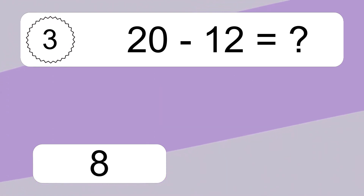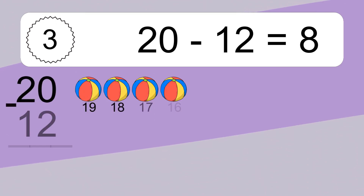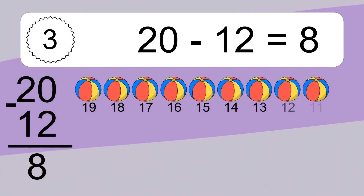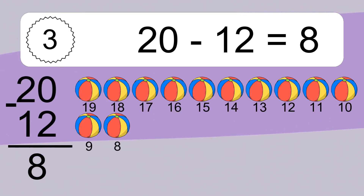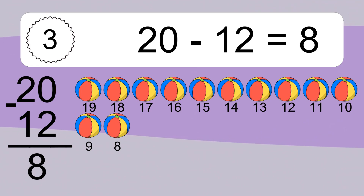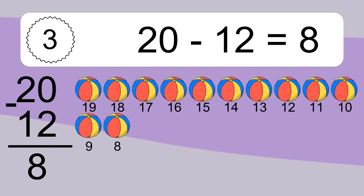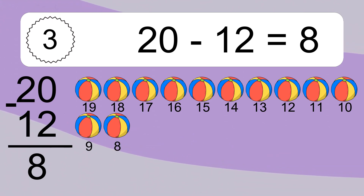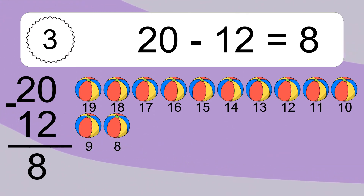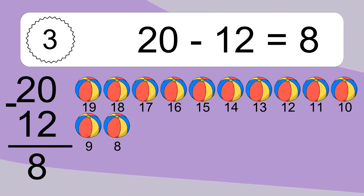20 minus 12 equals 8. Let's count it: 19, 18, 17, 16, 15, 14, 13, 12, 11, 10, 9, 8.